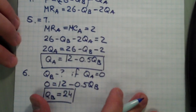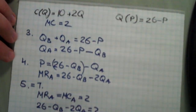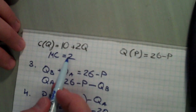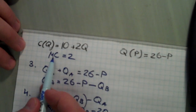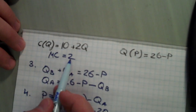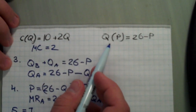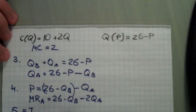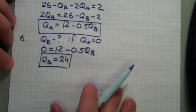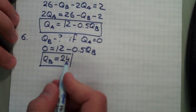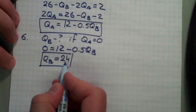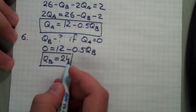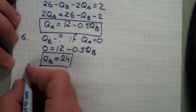In a competitive market, price equals marginal cost. If marginal cost equals 2, the market output would be 26 minus 2, which equals 24. So in other words, if firm B produces so much that the price drops to marginal cost, there is no reason for firm A to produce anything.